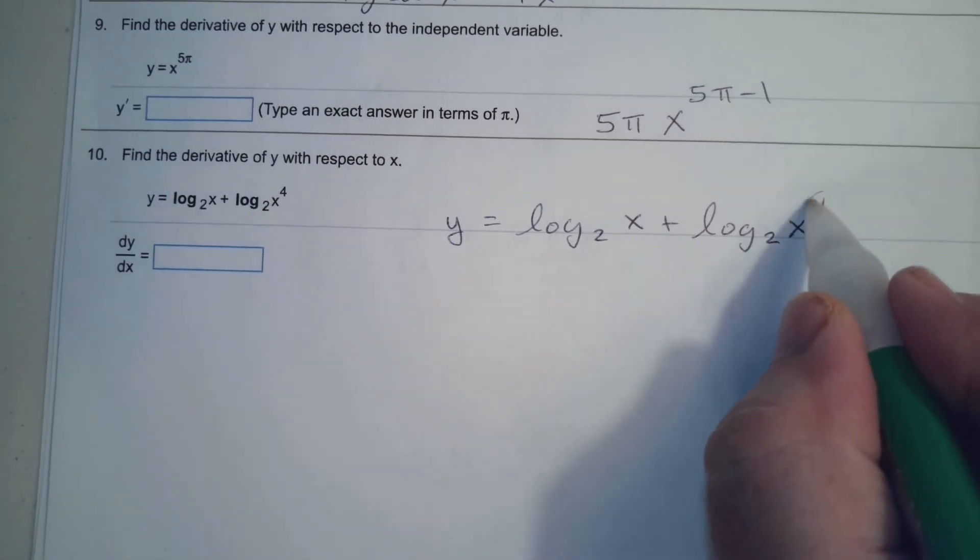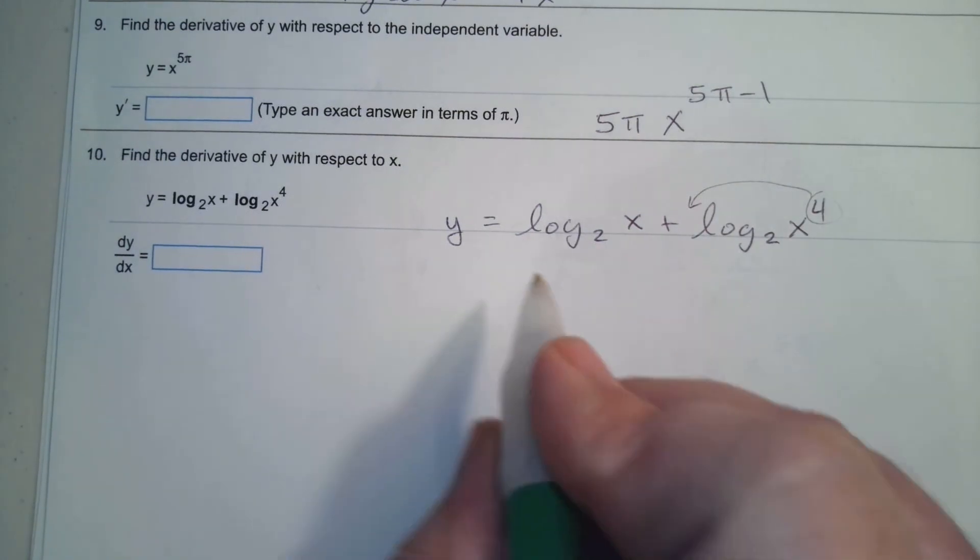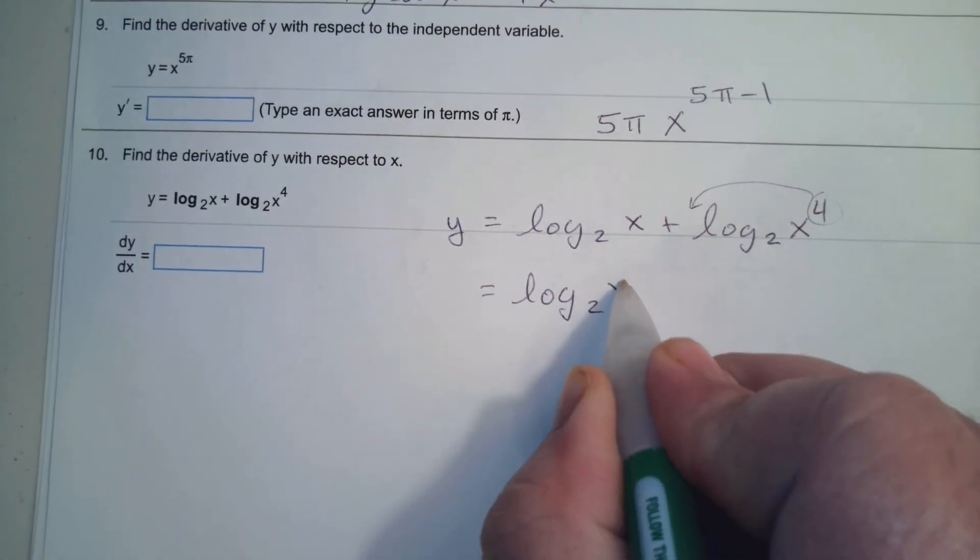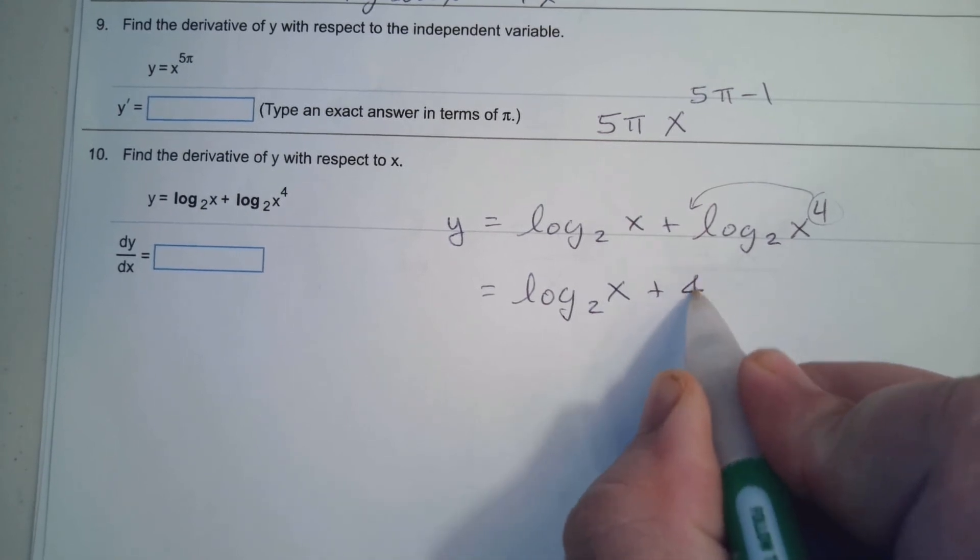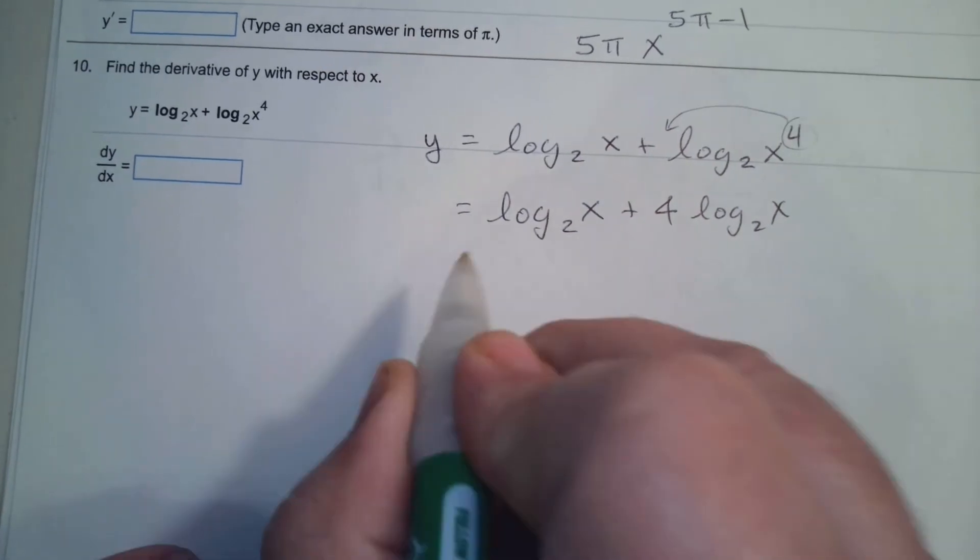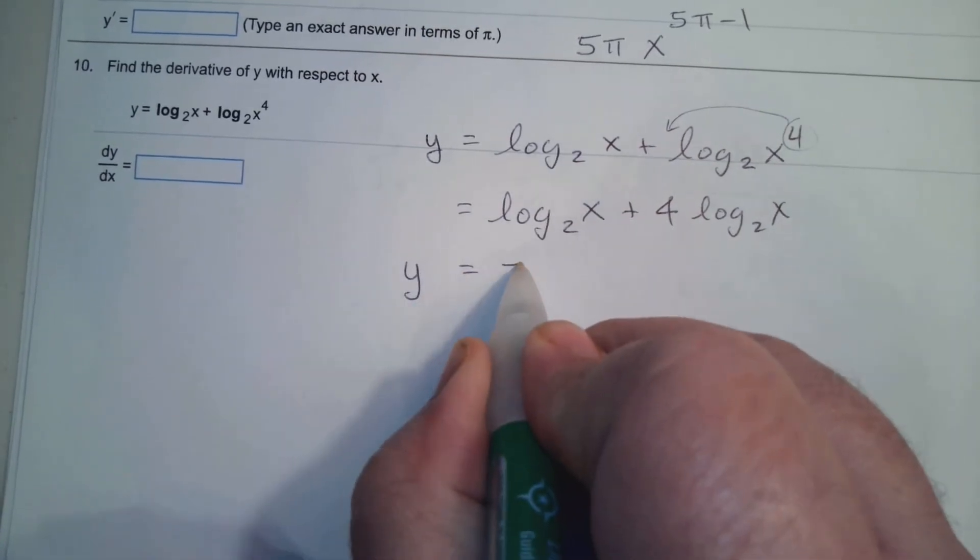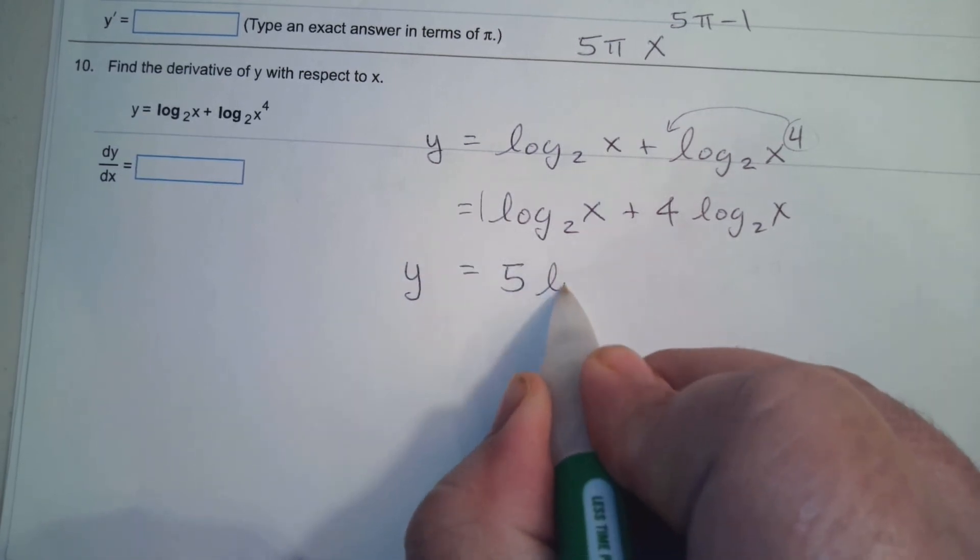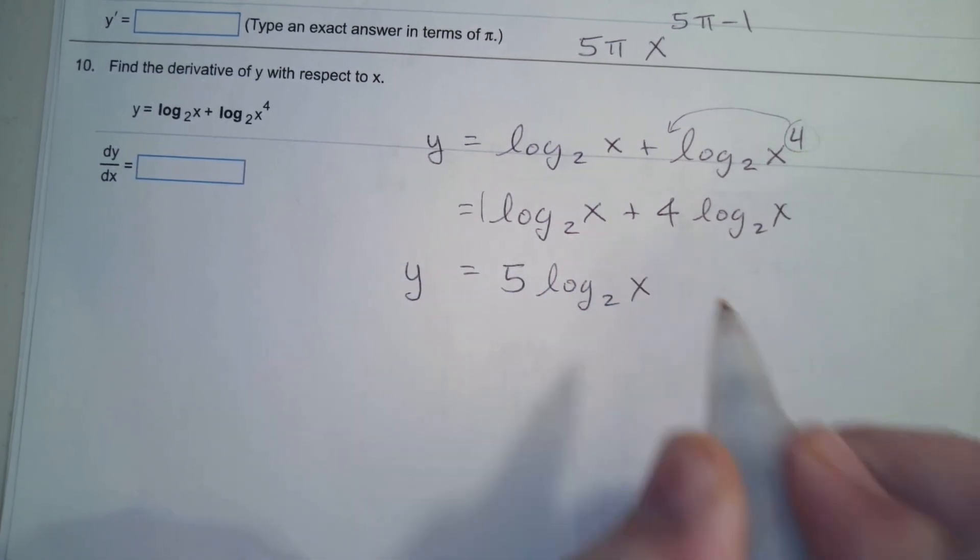Again, you can't have exponents, so that comes out in front. So we have log base 2 of x plus 4 log base 2 of x. Which means we have 1 here and 4 here, so we have 5 log base 2 of x.